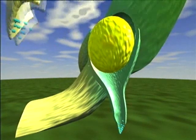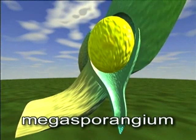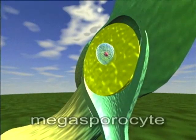Beneath the integument, there is a fleshy megasporangium containing a diploid megasporocyte cell.